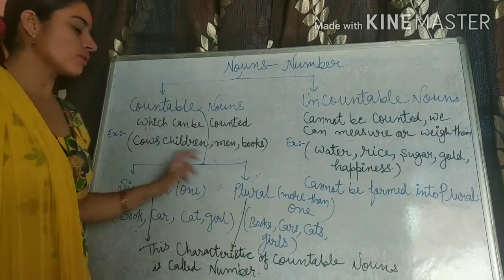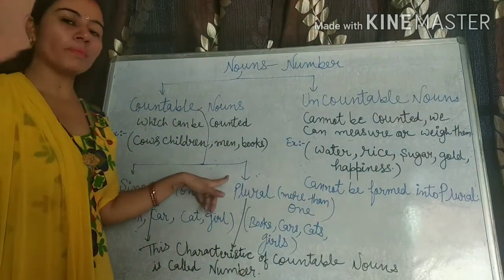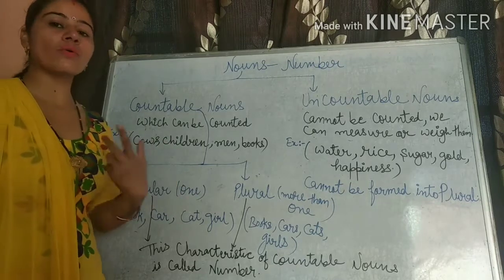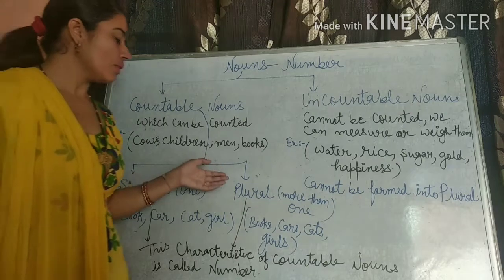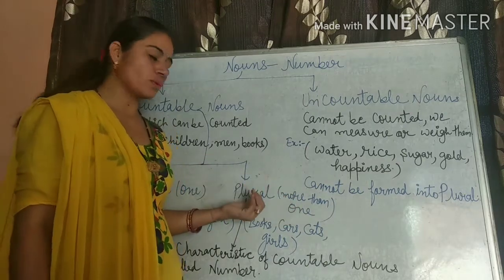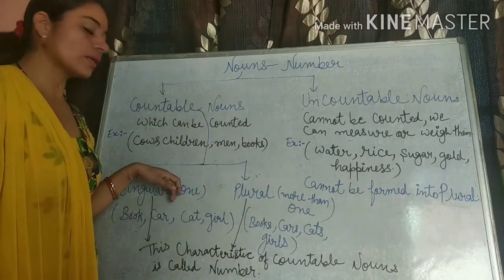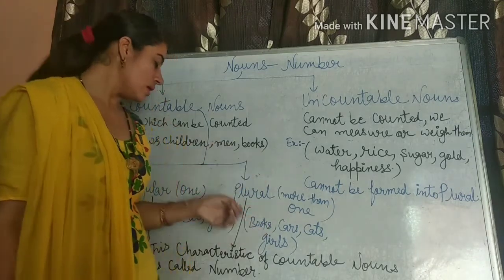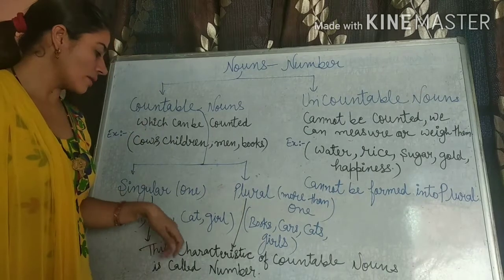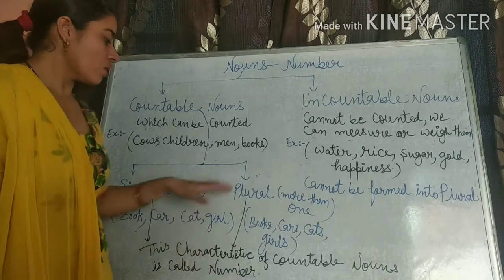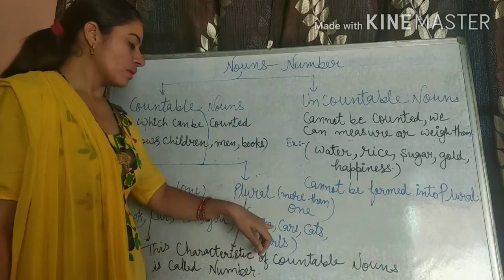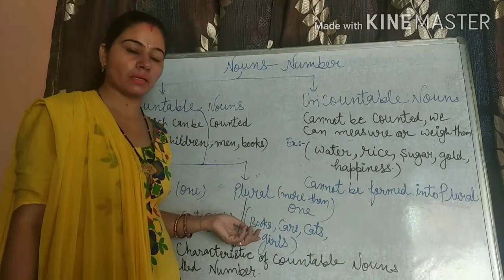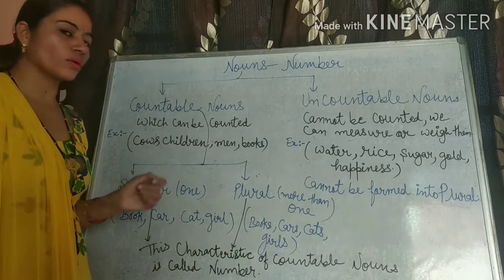Countable noun has two types: singular and plural. Singular — when we talk about one thing or one person, that is singular. When we talk about more than one, that is plural. Jab hum ek ki baat kar rahe hote hain, toh hota hai singular. Jab hum ek se zyada ki baat kar rahe hote hain, hota hai plural. Singular hota hai: book, car, cat, girl. Plural hai: books, cars, cats, girls.